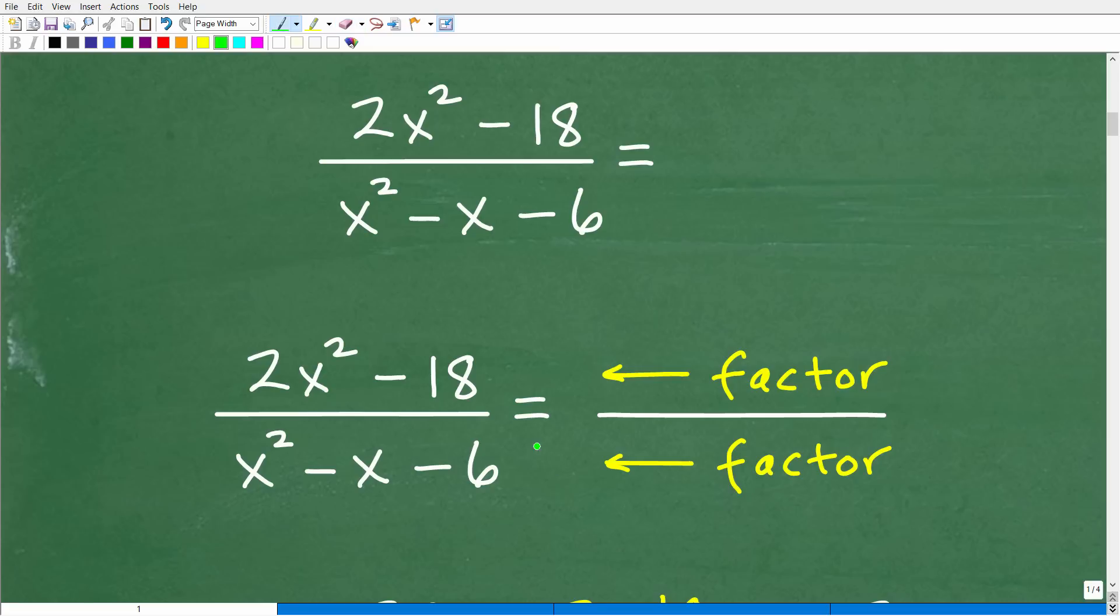So, looking at this problem, you have to say to yourself, all right, can I factor 2x squared minus 18? And can I factor x squared minus x minus 6? Now, let me just go ahead and state something right off the bat.